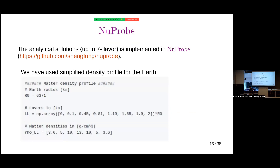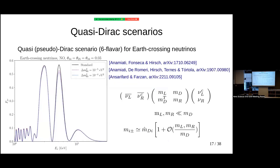The plots I showed are produced by a code implementing these analytical solutions up to seven flavors. With this code we can study more complicated scenarios, for example six-flavor quasi-Dirac neutrinos. Quasi-Dirac means that instead of three mass eigenstates, each actually splits into a pair with a very small mass splitting.